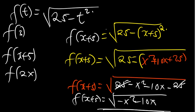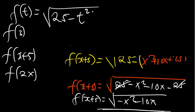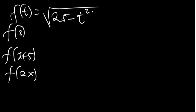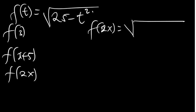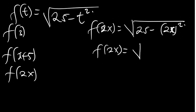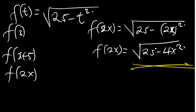You can pause the video and find part 3 yourself before continuing. For f of 2x, wherever there is t we put 2x: square root of 25 minus 2x squared. 2x squared is 4x squared, so f of 2x equals the square root of 25 minus 4x squared. There is nothing further to simplify, so this is the final answer.